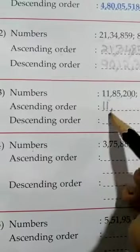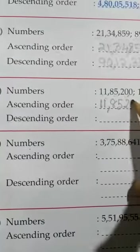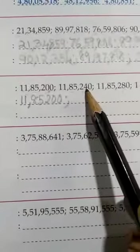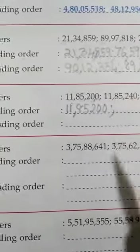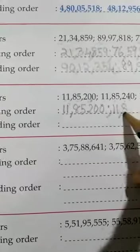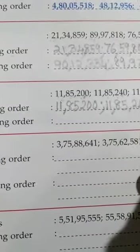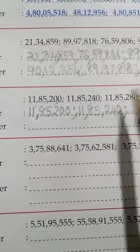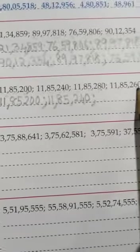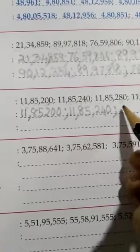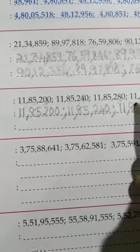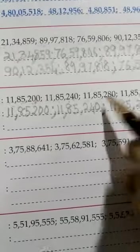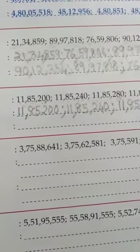So 11,85,200 will be the first number in ascending order. Next, among the remaining tens-place digits — 4, 8, and 6 — the smallest is 4, so that number comes next. Then the one with 6 in the tens place, and finally the one with 8. So we had to compare all the way to the tens place to find the order.